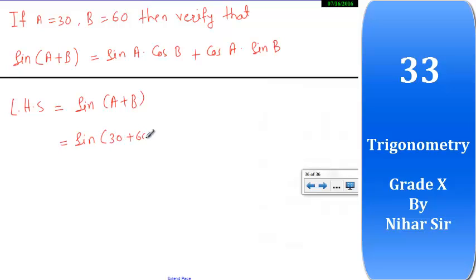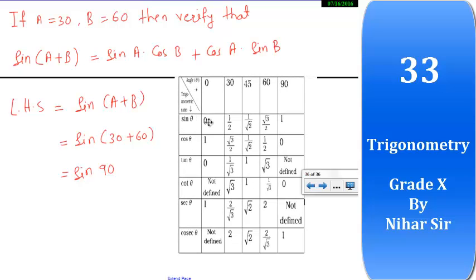So it will be sin 90 and value of sin 90 is in the table, right? These are trigonometric ratios, this is a table for trigonometric ratios. So this is 1, so sin 90 equals 1.